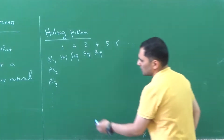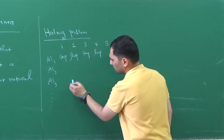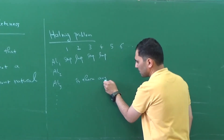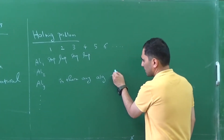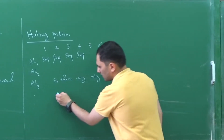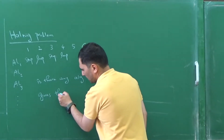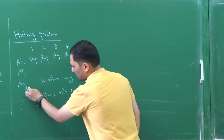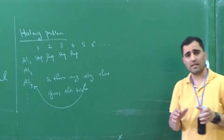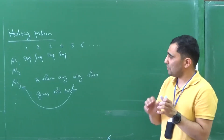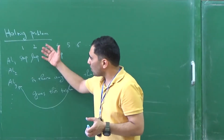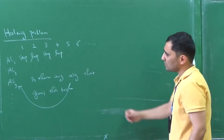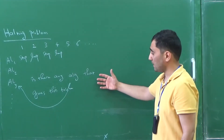The halting problem is the following: is there any algorithm that gives this table? Is there any algorithm that can tell you whether or not any of these algorithms stops at any of these inputs? The answer to this question is negative, and I'm explaining here why.